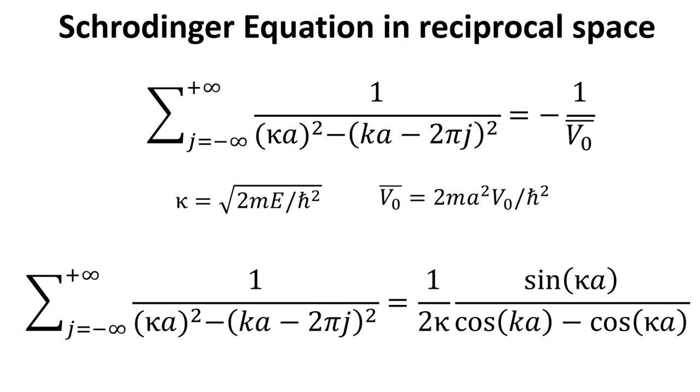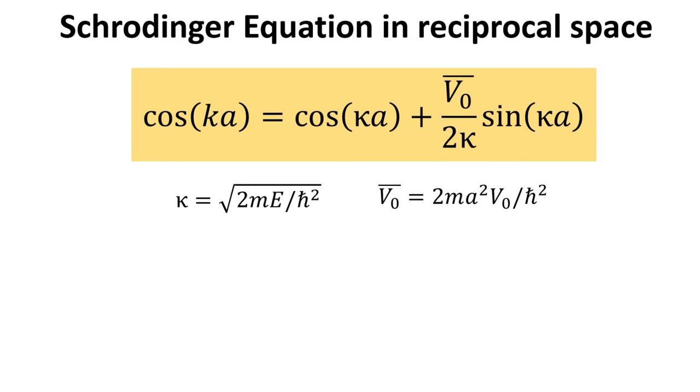We can further simplify this expression through standard trigonometrical identities to bring the summation results into a more familiar form. Finally, we obtain the equation for determining the energies for a given momentum k for electrons in the Kronig-Penney potential. This is shown here in the yellow box. We now analyze what the solutions tell us about the electronic states.